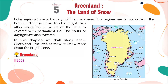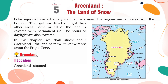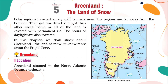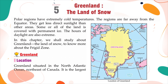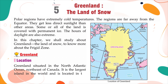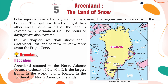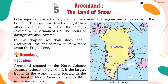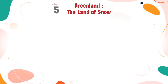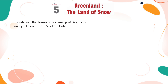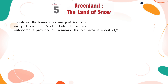Greenland — Location. Greenland is situated in the North Atlantic Ocean, northeast of Canada. It is the largest island in the world and is located in the continent of North America. It stands third in terms of area in North American countries. Its boundaries are just 650 kilometers away from the North Pole. It is an autonomous province of Denmark.